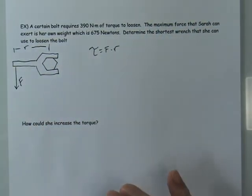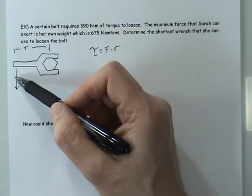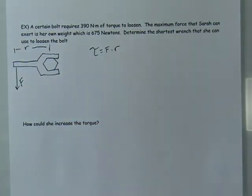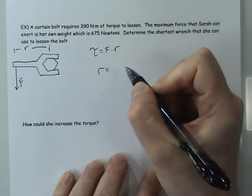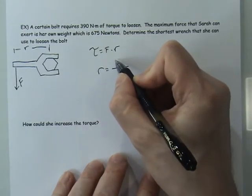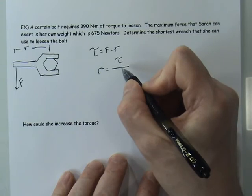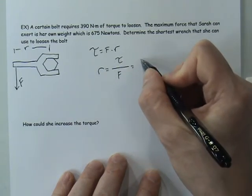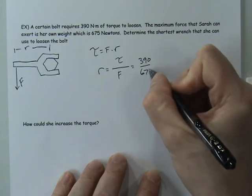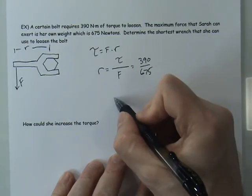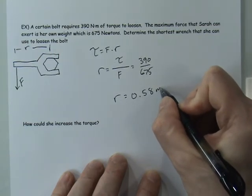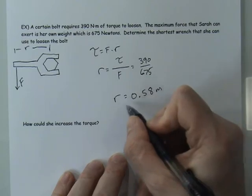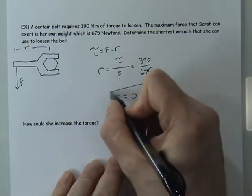Since the force is applied perpendicular we don't need the sine of theta term. Torque equals F times r, so r equals torque divided by force: 390 divided by 675 gives a required lever arm of 0.58 meters. We need a wrench at least 0.58 meters — about 60 centimeters — long to loosen this bolt using the person's maximum force, which is simply their weight.